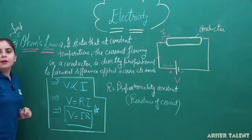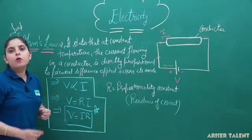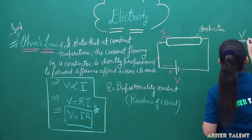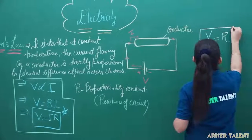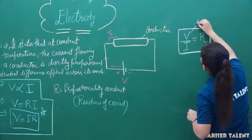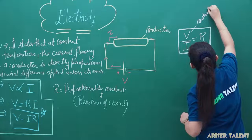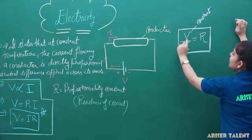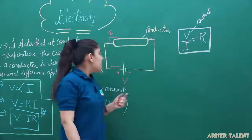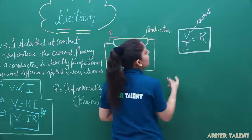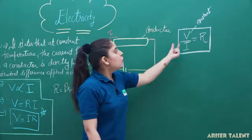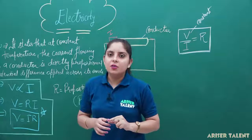V = IR is our Ohm's law and this formula is very important for solving numerical problems. We can also write it as V upon I = R. It means V upon I is actually a constant term, but voltage is directly proportional to current. As you increase the voltage, the current will automatically increase in a conductor. R and I, and R and V, are inversely proportional to each other. This ratio V upon I is known as the resistance of a circuit.